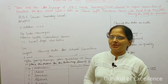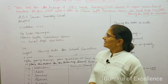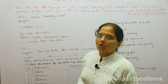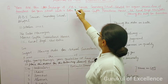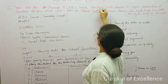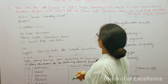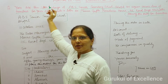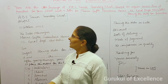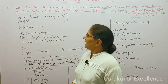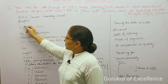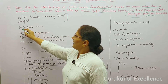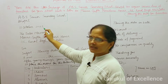Let's see how to attempt this question. First of all, you can write your address as given in the question: ABS Senior Secondary School, Bhopal.